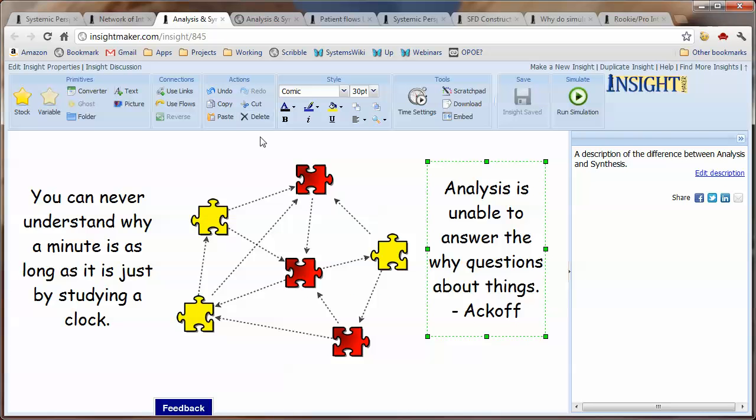The way that understanding was developed over many years was doing something called analysis, where you take something apart and study all the parts and attempt to understand that thing from understanding all of the parts. Though there's a limit to what one can understand from simply understanding the parts, one needs to understand the way that the parts interact.